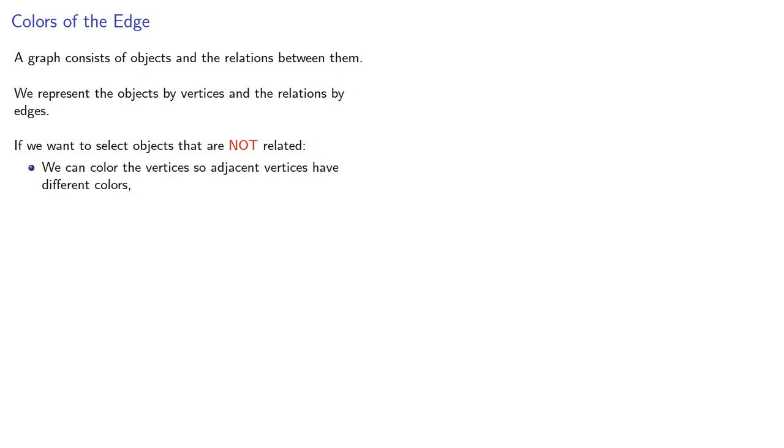A graph consists of objects and the relations between them. We represent the objects by vertices and the relations by edges. If we want to select objects that are not related, we can color these vertices so that adjacent vertices have different colors, then select all vertices of one color.